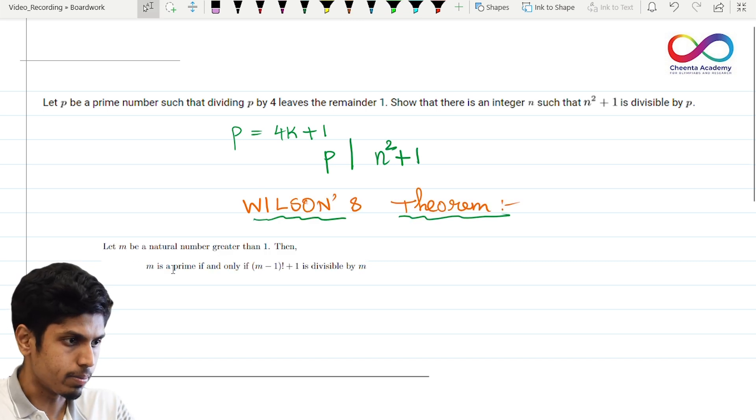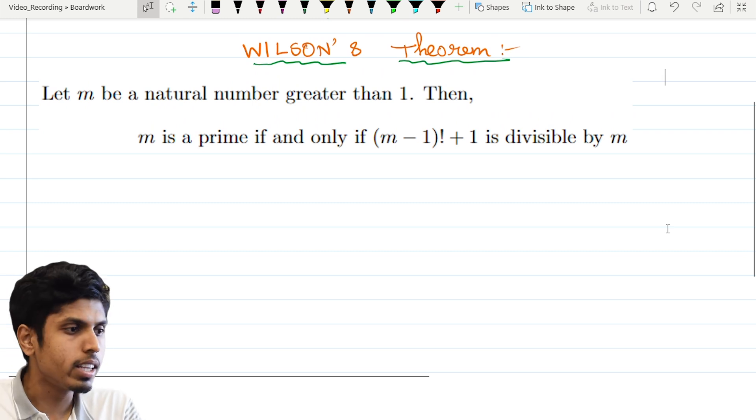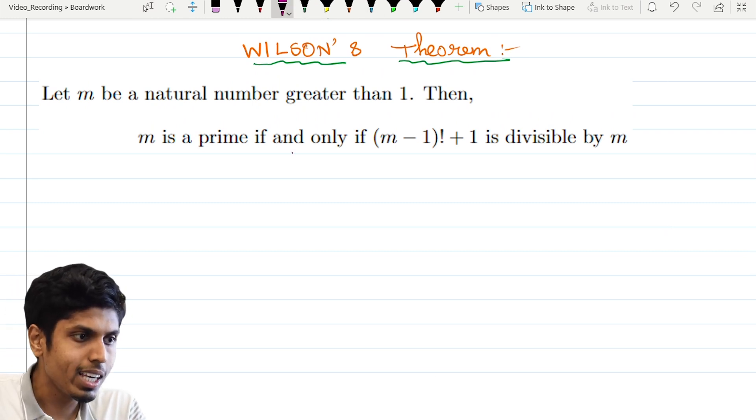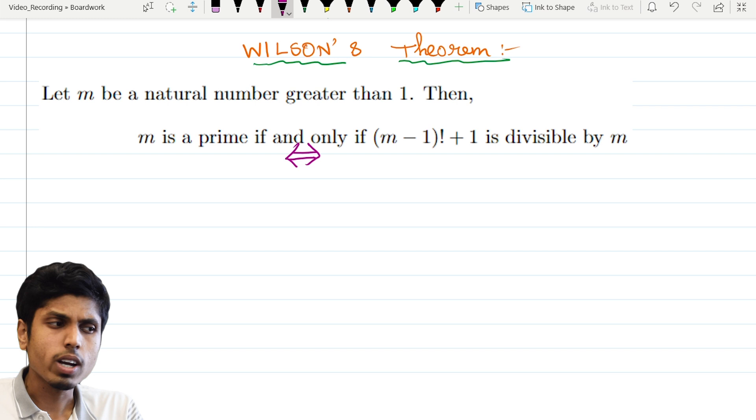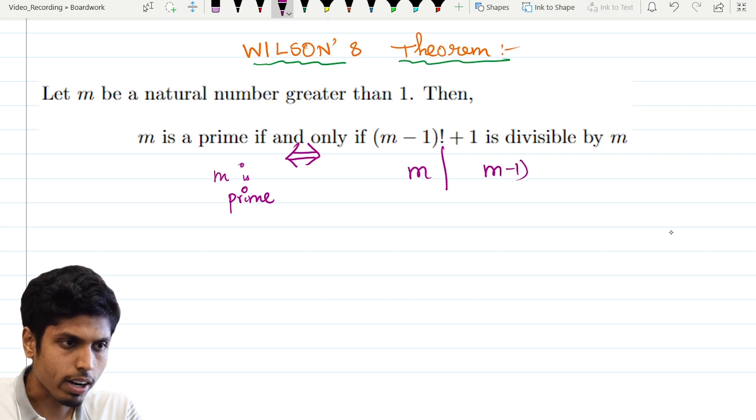Here is Wilson's theorem. It states that let m be a natural number greater than 1. Then m is a prime if and only if m minus 1 factorial plus 1 is divisible by m. So I can think that Wilson's theorem is a prime detector theorem. So it says that m is a prime if and only if m divides m minus 1 factorial plus 1. So the converse of this, like from right to left, it's not very difficult to prove.